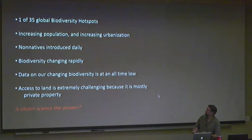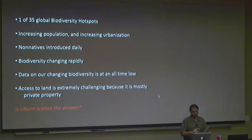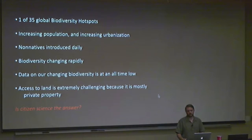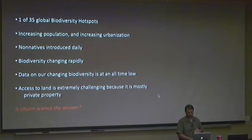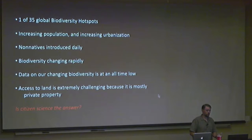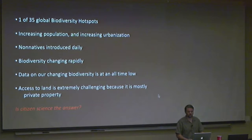As an overview: we've got a global biodiversity hotspot, incredible urbanization, non-native species constantly coming in, rapidly changing biodiversity, and the data we have to document this is horrendously poor. One big reason is that the greater LA area is full of private property — backyards, front yards, private residences. A biologist can go survey a national forest, but how do you survey when your plot of land is a city block with 20 different private properties? When I moved to Los Angeles, I started wondering whether the solution to getting data from these regions is citizen science.